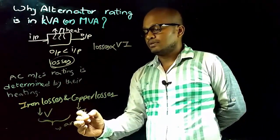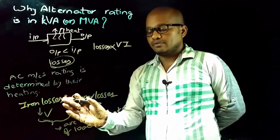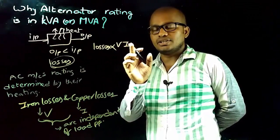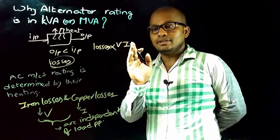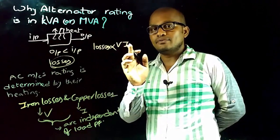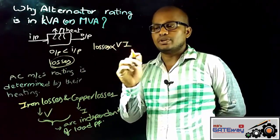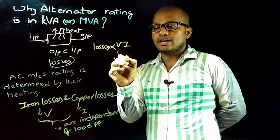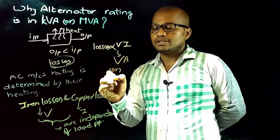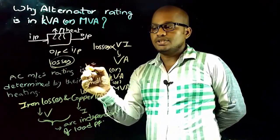Since these losses are independent of load power factor, if losses were dependent on power factor, then losses would be proportional to V×I×cos(φ), which represents real power P = VI cos φ, and the rating would need to be in kilowatts. But because losses are independent of power factor, losses are directly proportional to V×I only, so the rating of the alternator is in VA, KVA, or MVA.